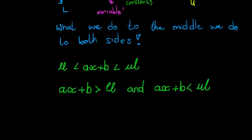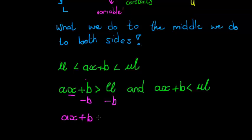Why do I write it like this? To show you that if I wanted to solve for x, I would first subtract b on both sides. So subtract b, subtract b, and I get ax — the plus b is now gone — is greater than lower limit minus b.